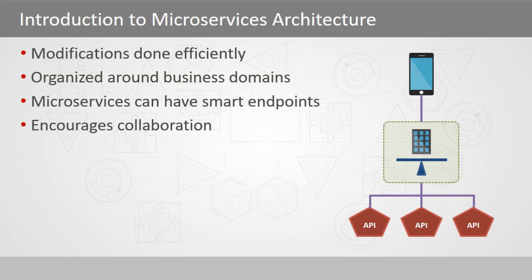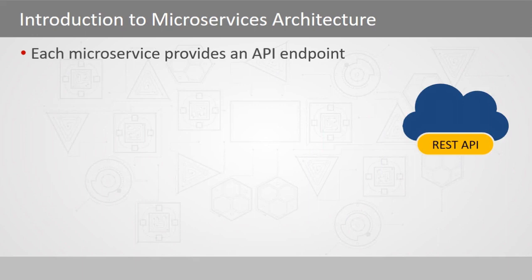This encourages collaboration, because if we have one team working on sales and another team working on inventory, these two teams have to collaborate. They have to define those endpoints. Each microservice then has to provide an endpoint — usually it's a REST endpoint, but it could be a WSDL endpoint as well.